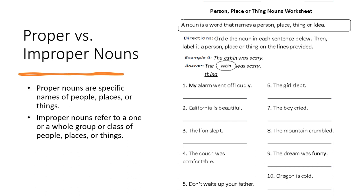Number seven: 'The boy cried.' Number eight: 'The mountain crumbled.' Number nine: 'The dream was funny.' Now, dream is a very interesting word, right? Because in this sentence, the word dream is used as a noun. But if I say 'I dream of going to the moon,' then dream becomes a verb. We've talked about this in other videos. Last one — number ten: 'Oregon is cold.' So in six through nine, those nouns were all improper nouns. And in number ten, the noun Oregon would be called a proper noun.